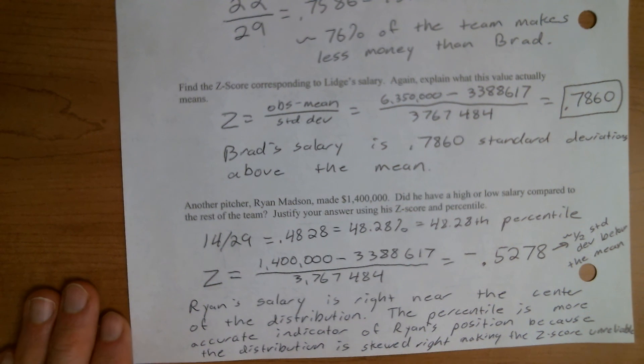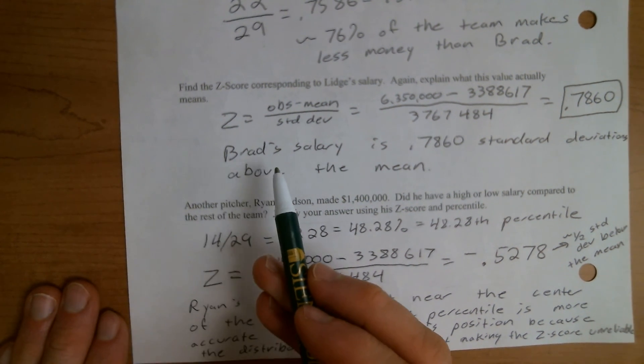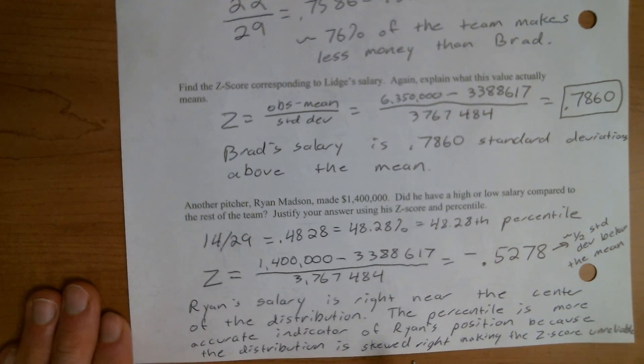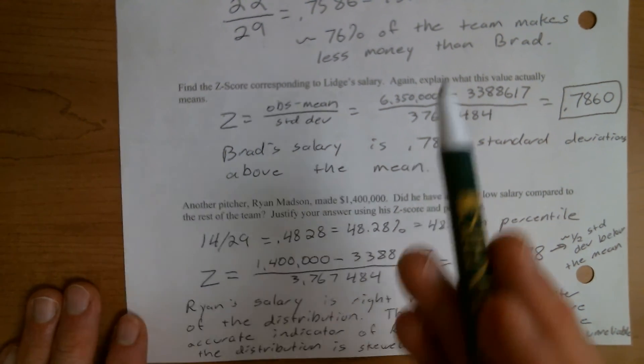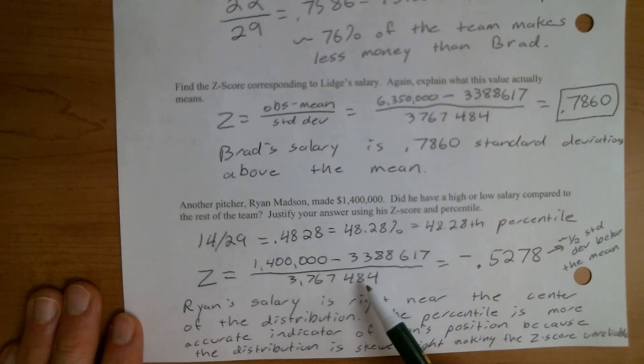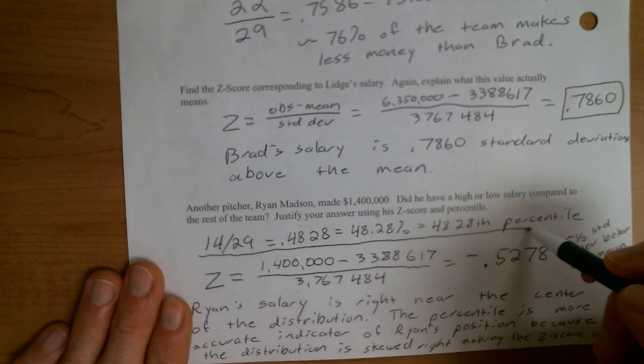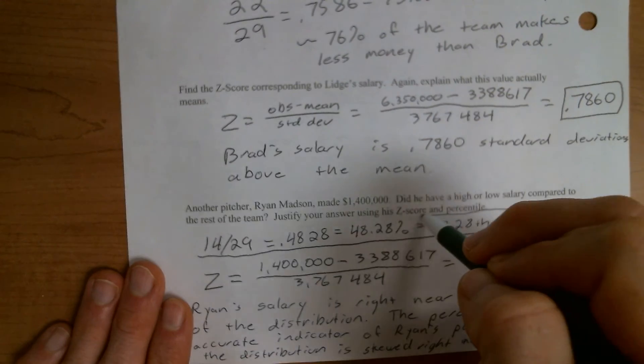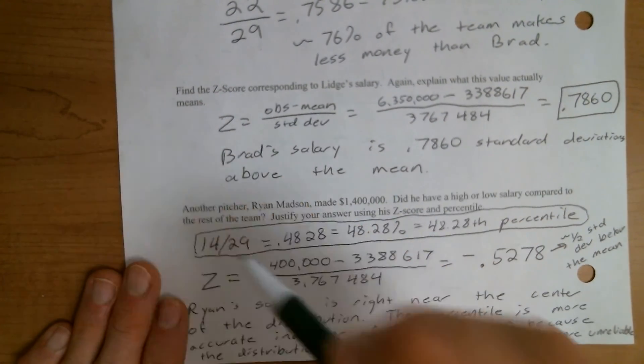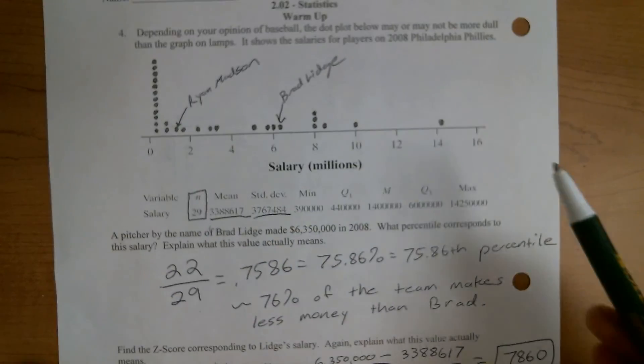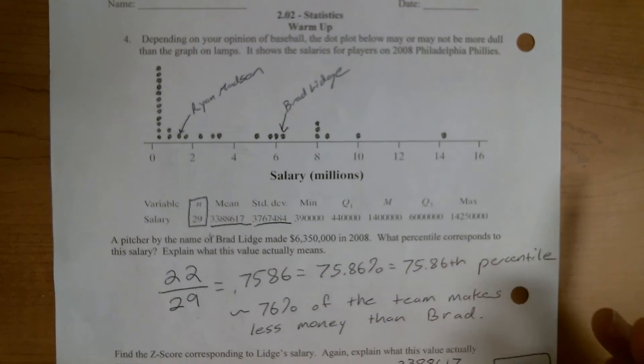So this is kind of unit one information influencing how we think about information in unit two and saying to ourselves, okay, I know that when something is skewed, these two numbers are not reliable. So I need to stick with this calculation up here. If I'm describing where somebody falls in a distribution due to the shape that I can see from my dot plot up here.